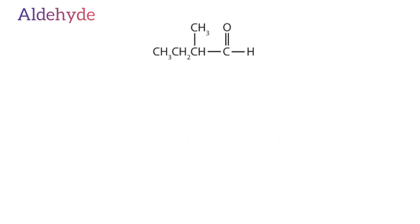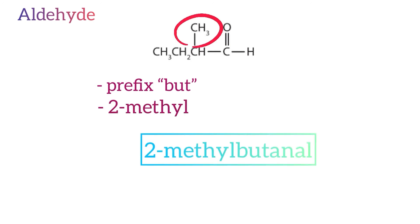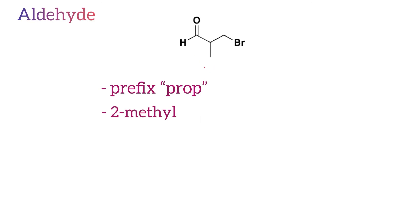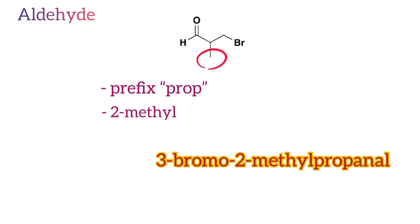Aldehydes: here is an example of the aldehyde functional group. There are four carbon atoms in the main chain, therefore the prefix is 'but'. There is one methyl group attached to the main chain, therefore the locant is '2-methyl'. As such the name of the molecule will be 2-methylbutanal. Here is another example: there are three carbon atoms, so the prefix is 'prop'. There is a hydrogen atom, bromine atom, and methyl group on carbon two, therefore the locant is '2-methyl', giving 3-bromo-2-methylpropanal.